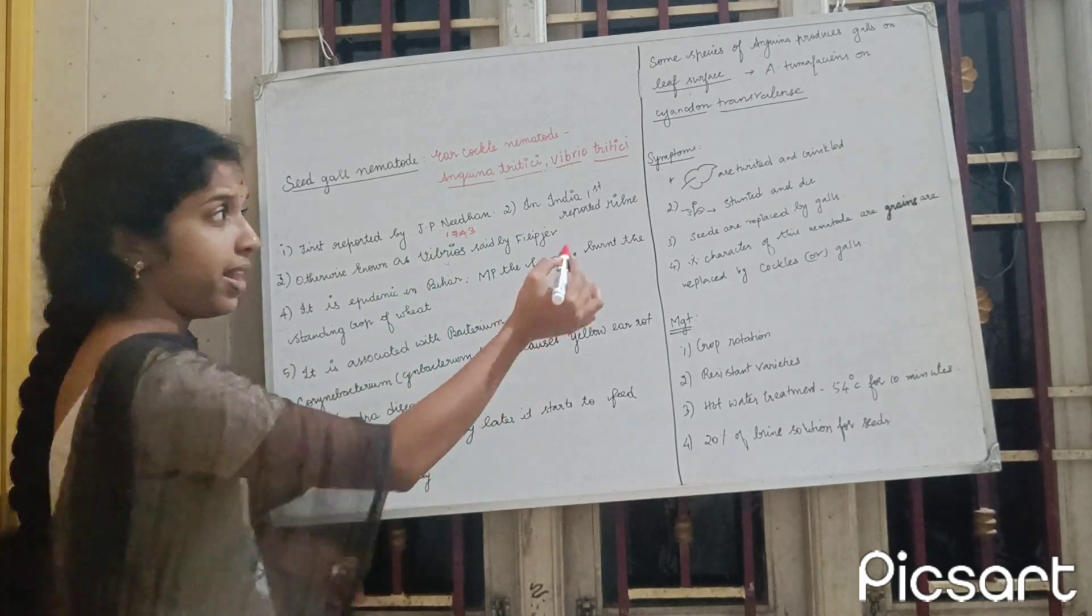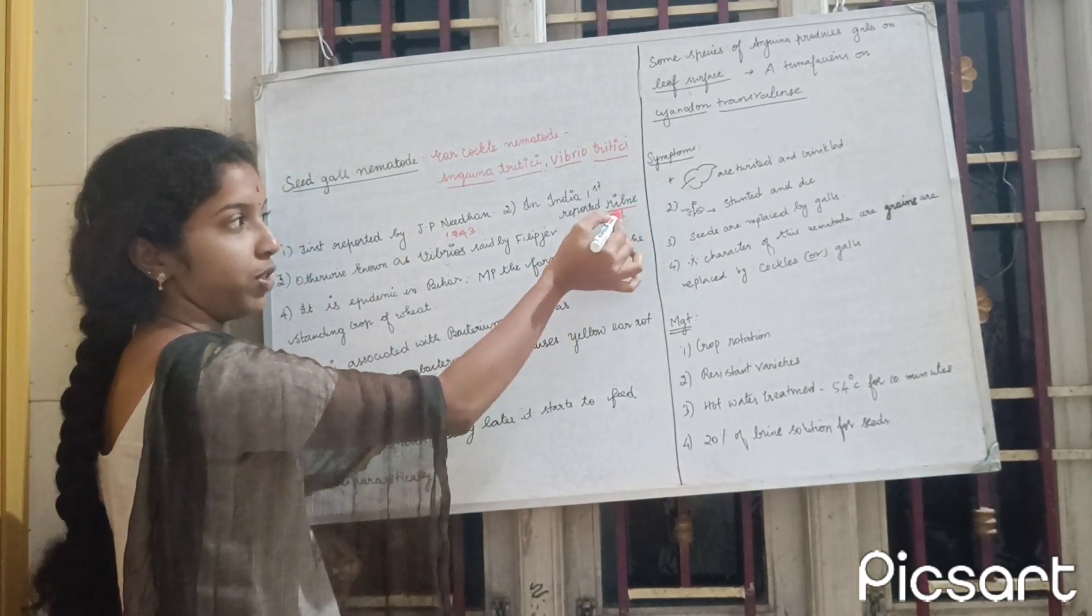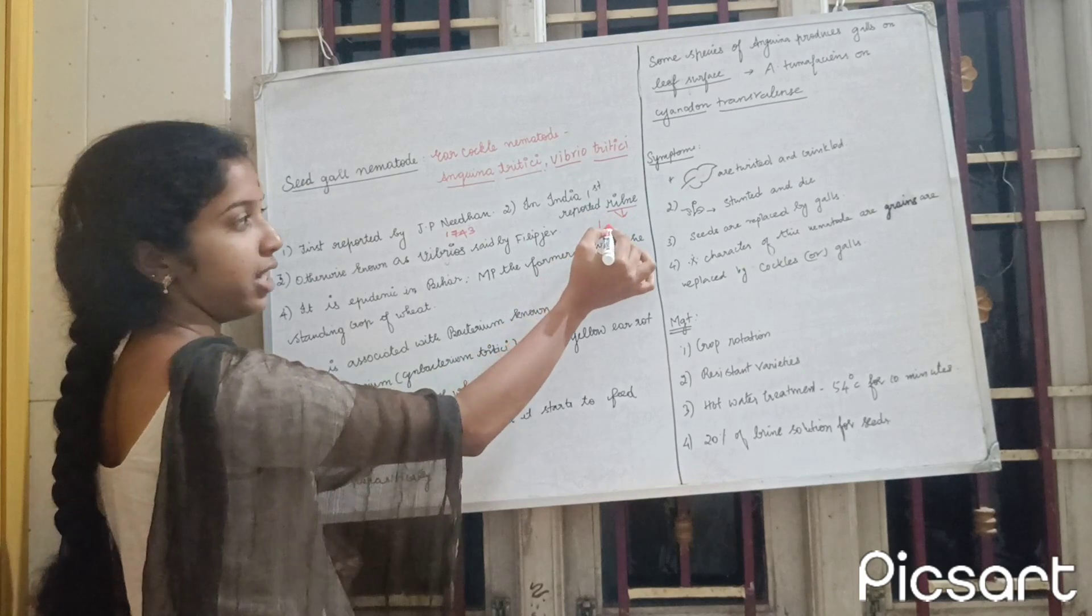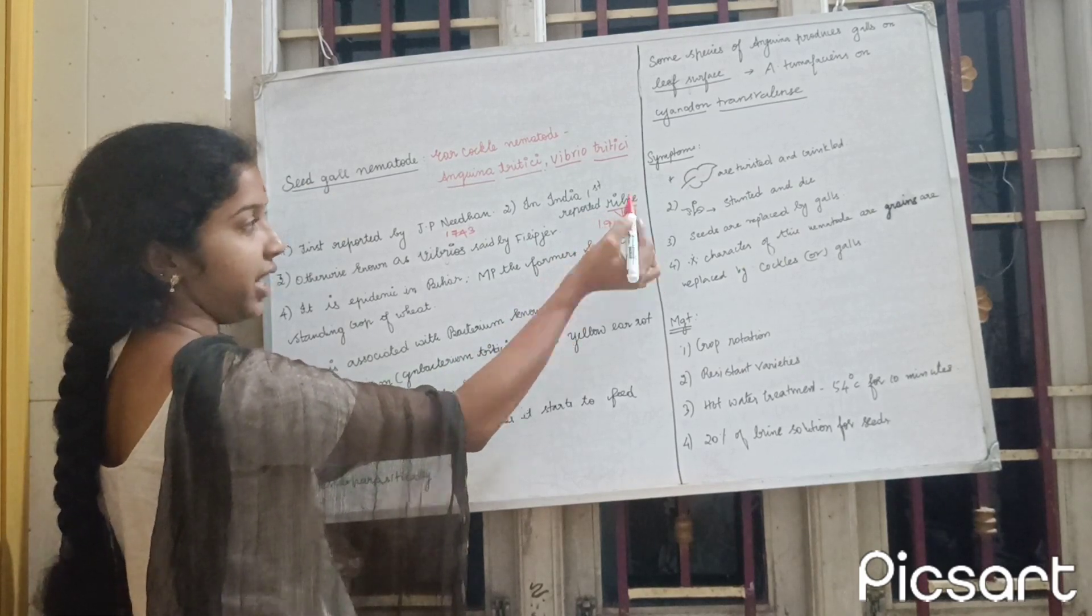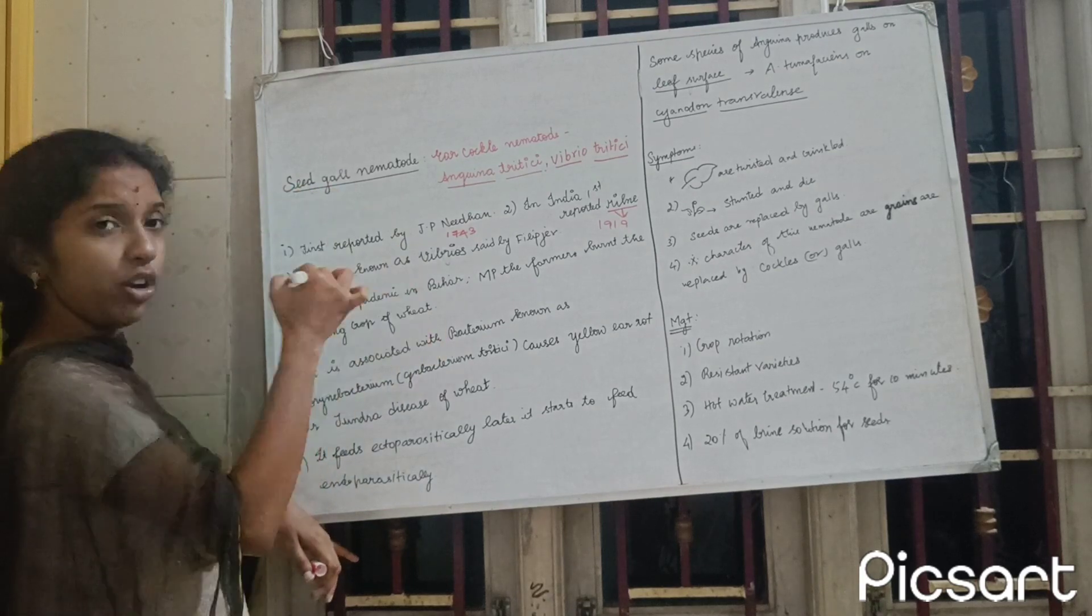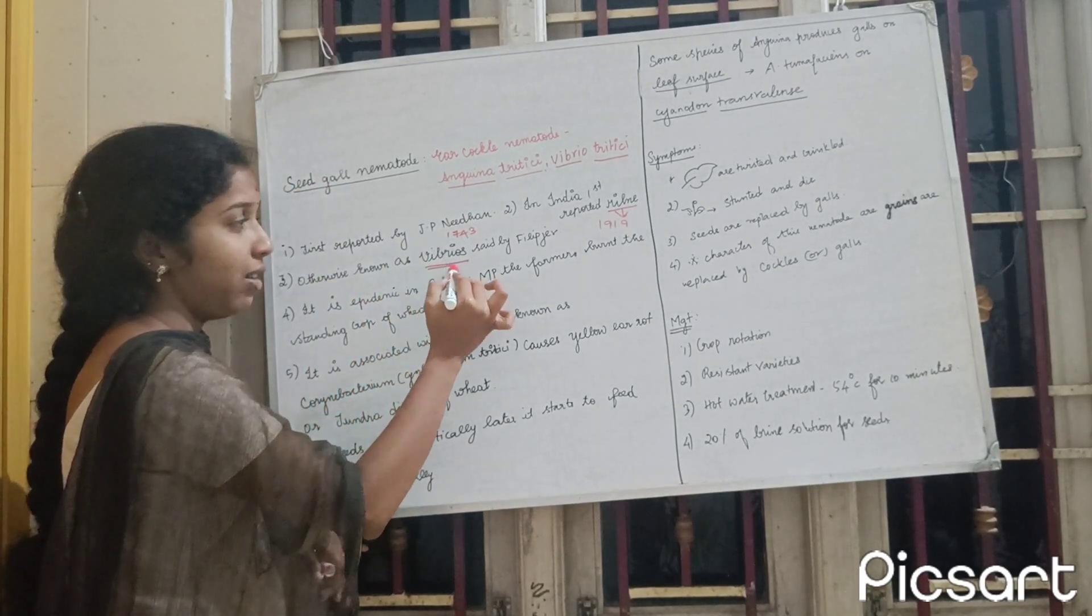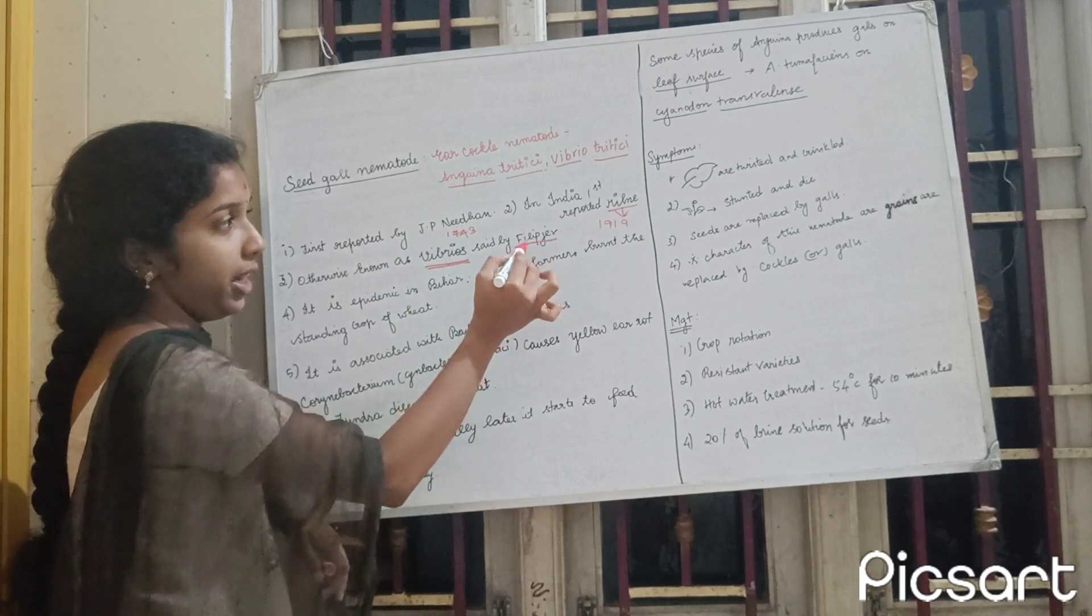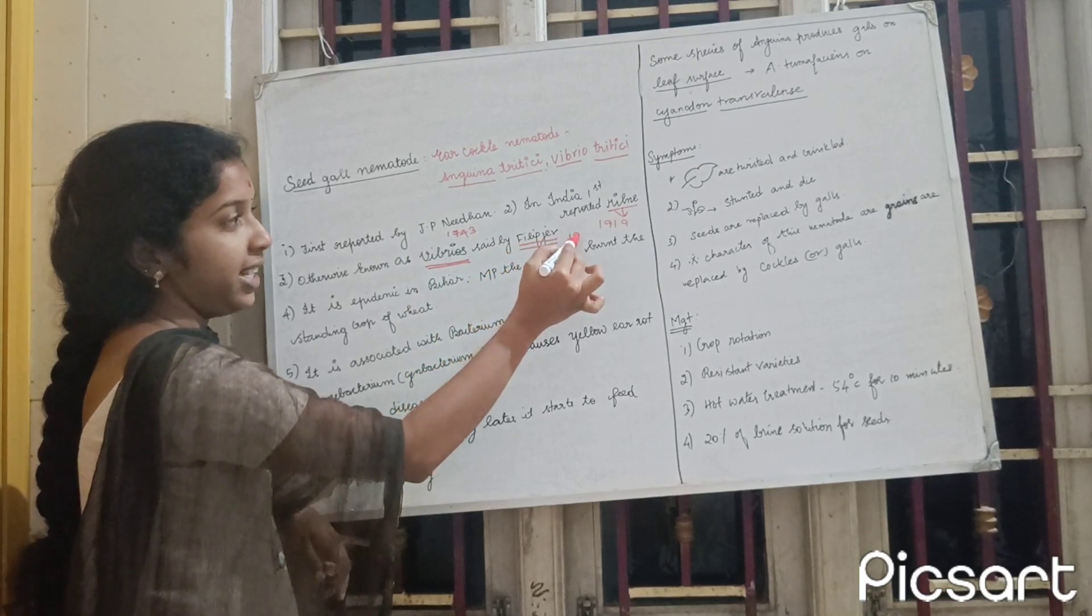He told us about this year 1743. He told us about seed gall nematode, that is Vibrio. Who will say about this year? Philip Jeeu, when the year is 1936.